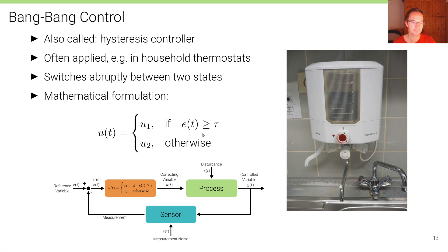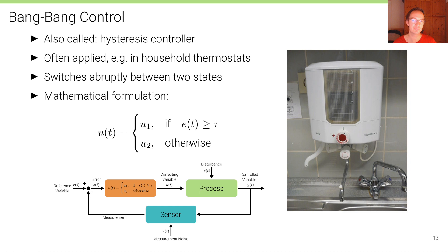The mathematical formulation for this controller is simple. Remember that we're defining the orange box from the diagram, which has as an input the error e and as an output the correcting variable u. So we need to define a mapping from e to u. The most simple form is this case distinction: u is defined as u1 if the error is above a threshold, and as u2 otherwise.